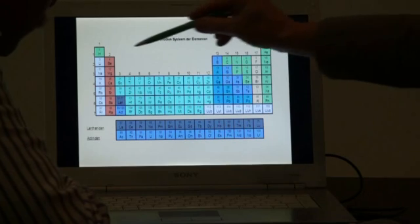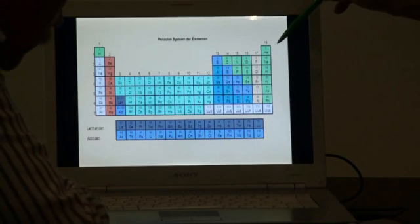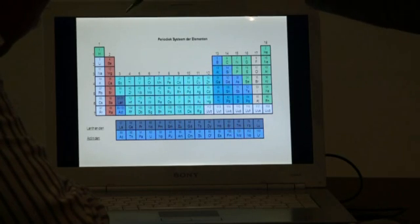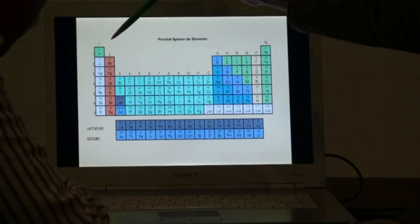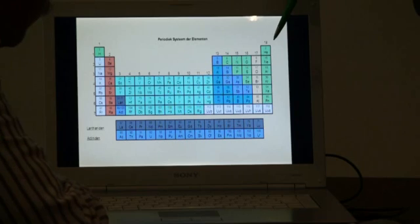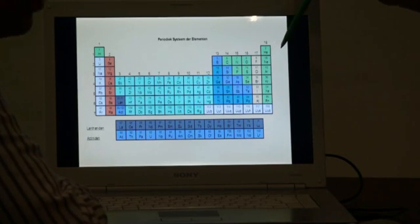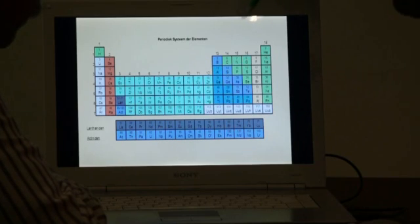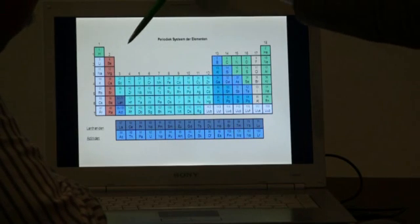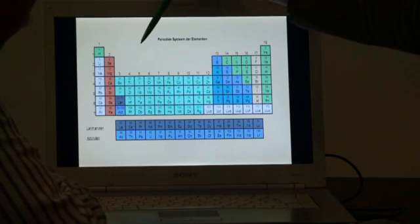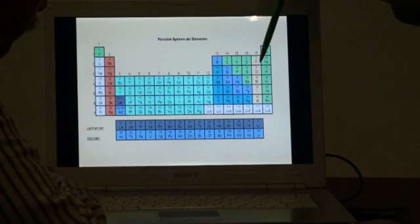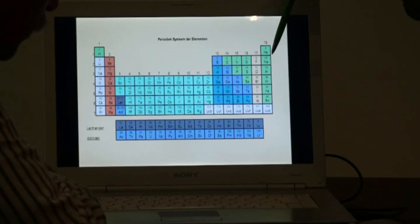When you look at the periodic system, you have the first series, which is the hydrogen series, where hydrogen has an electron shell with one electron and helium has an electron shell with two electrons. Then you have the next series, starting with lithium, which has a new electron shell. This electron shell is filling up until eight, which is neon.